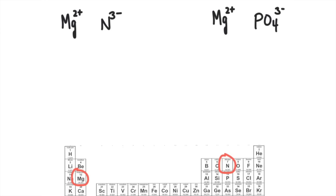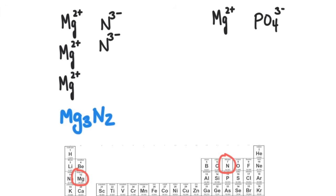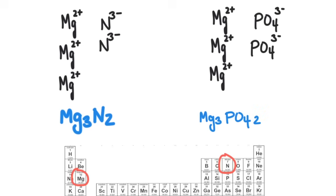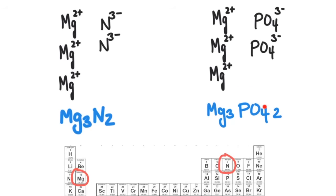Let's compare the compounds formed when magnesium reacts with the nitride ion and when magnesium reacts with the phosphate ion. Magnesium has a 2+ charge and nitride has a 3− charge, so we need three magnesiums and two nitrides — the formula is Mg₃N₂. Magnesium has a 2+ charge and phosphate has a 3− charge, so we need three magnesiums and two phosphate ions. To write this, we put PO₄ into brackets with a subscript 2 on the outside, giving Mg₃(PO₄)₂ — magnesium phosphate.